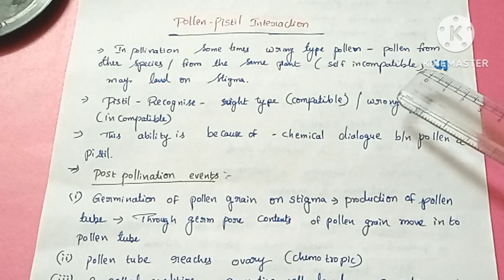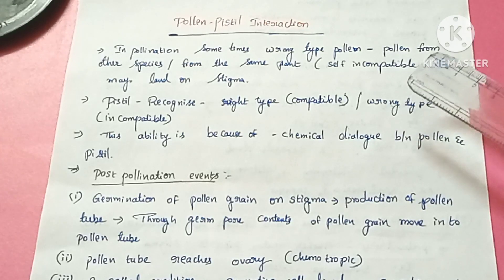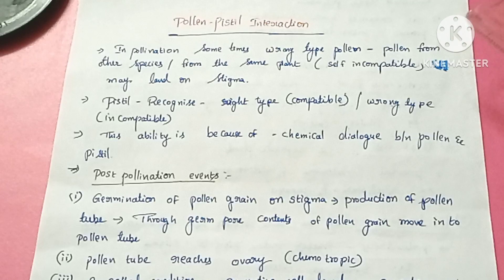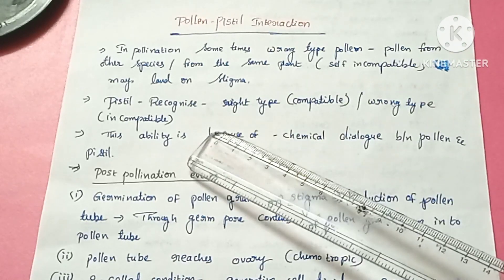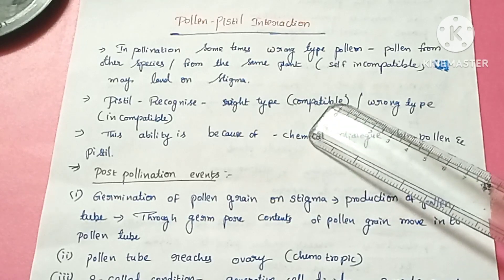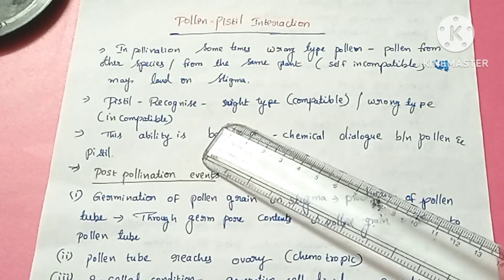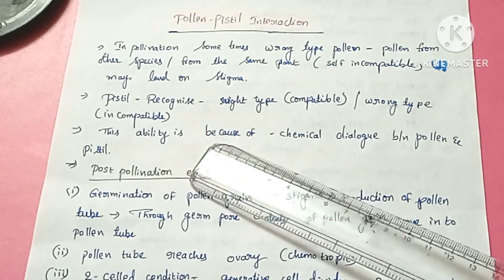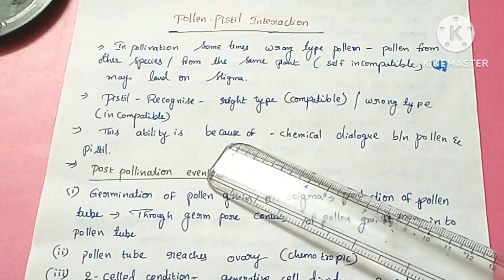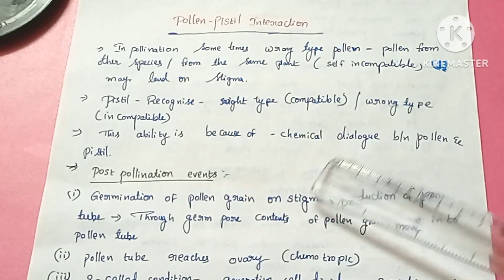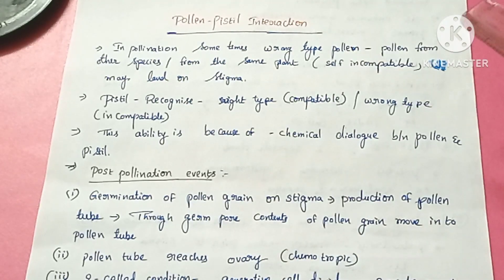Now we will see pollen-pistil interactions. Pollination is not always a guaranteed process — there is no guarantee of the transfer of the right type of pollen onto the stigma. Sometimes the wrong type of pollen also lands on the stigma. However, the pistil can recognize whether it is the right type (compatible) pollen or wrong type (incompatible) pollen. This ability of the pistil to recognize pollen, followed by its acceptance or rejection, is a result of continuous chemical dialogue between the pollen and pistil.